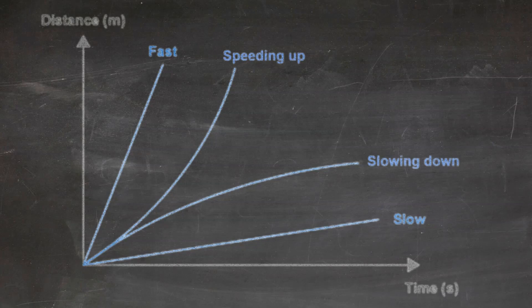The two straight lines represent fast or slow. These are moving at a constant speed because they are straight lines. The fast line is moving faster than the slow line because it has a steeper slope.